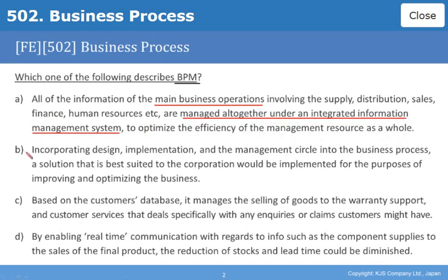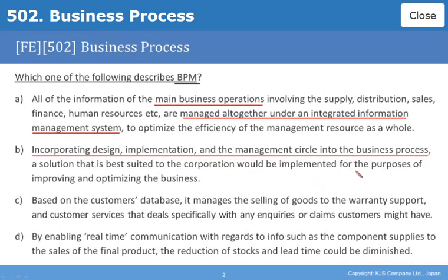Option b: Incorporating design, implementation and the management circle into the business process. A solution that is best suited to the corporation would then be implemented for the purposes of improving and optimising the business.